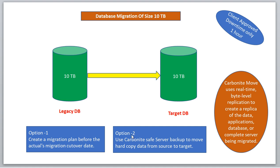During cutover, when the application is disconnected from the legacy database and there are no ongoing transactions, all committed transactions are already replicated to the target via Carbonite. On the target machine, you simply need to attach the database using the primary and secondary database files, because you have an exact copy of the database files from the legacy server. This attach-and-detach approach is a standard migration method, but Carbonite automates the replication in the background.